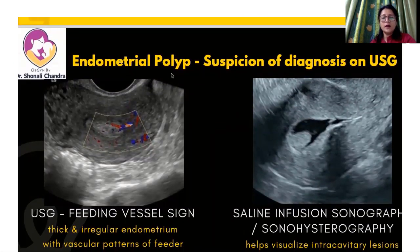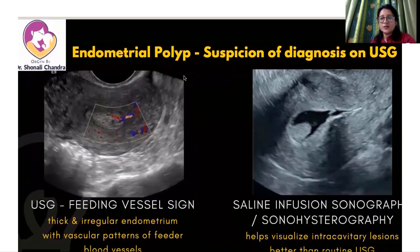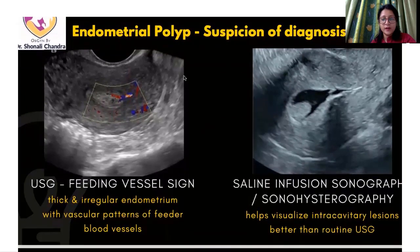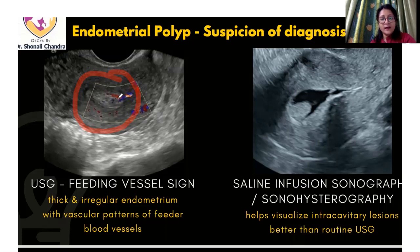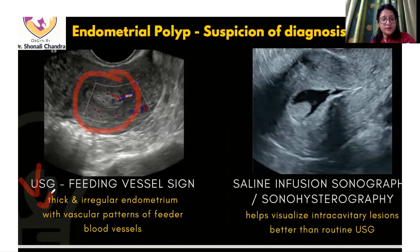The normal grayscale ultrasound will give us a suspicion of the diagnosis of endometrial polyp. Looking at the figure here on the left, this is a grayscale ultrasound and we can see that the endometrium is quite thick. When we put color Doppler, we see that a small mass inside this thick endometrium is being fed by a vessel — this is what we call the feeding vessel sign. So the endometrium can be thick and irregular with vascular patterns of feeder blood vessels.